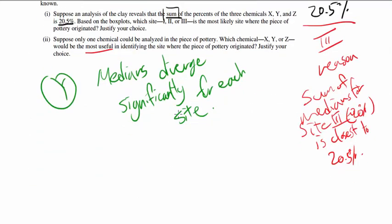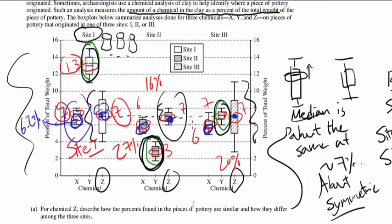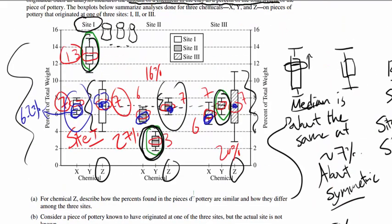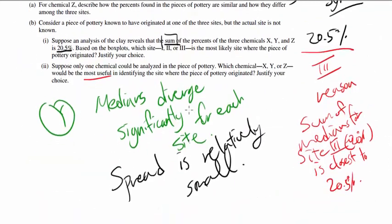And another nice thing is that spread is relatively small for Chemical Y. So the box plots don't overlap as much. Actually for Chemical Y, they do not even overlap. So Chemical Y is gonna be the best way to go.